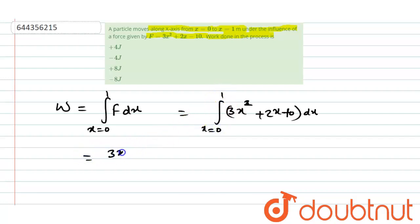Integration of x square is x cube upon 3 plus 2x square divided by 2 minus 10x. x varies from 0 to 1.